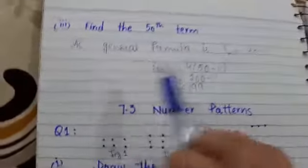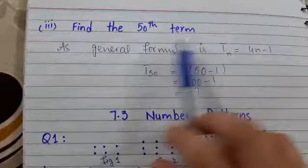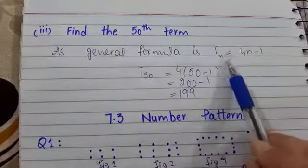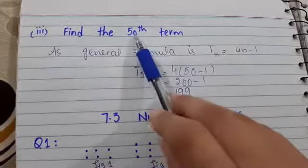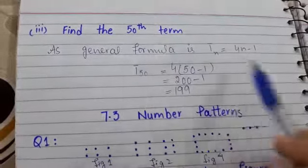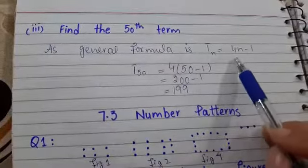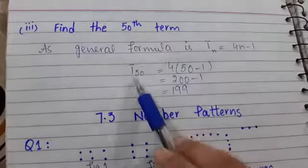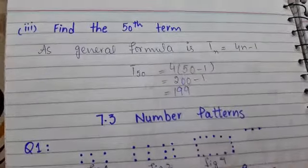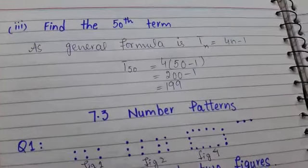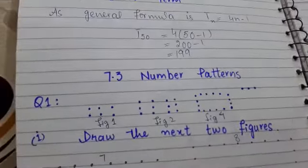The third part states: find the 50th term. Since the general formula is Tn = 4n − 1, we replace n with 50: 4 × 50 − 1 = 200 − 1 = 199.